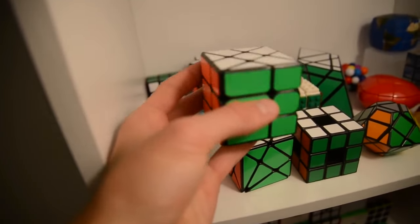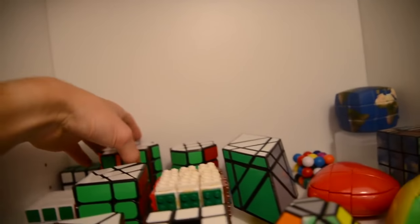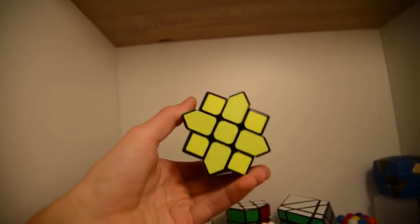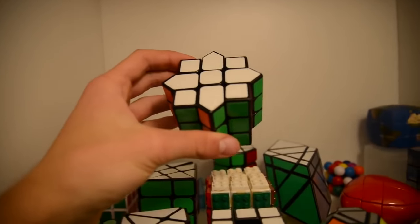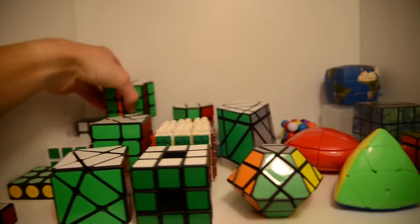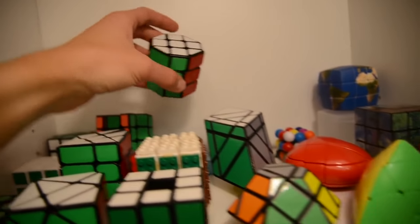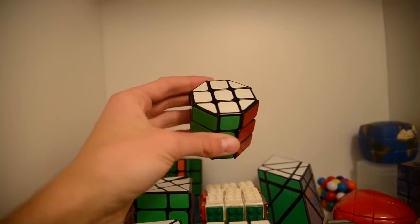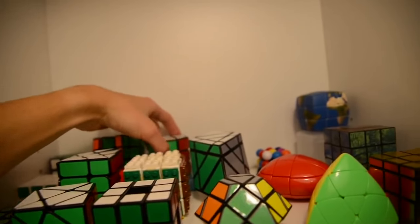So this is the 3x3 windmill cube. Next up we had a Fisher cube but I turned it into a star as you can see. Basically I replaced the pieces with another puzzle and I made a barrel and a star cube. So that's fun.